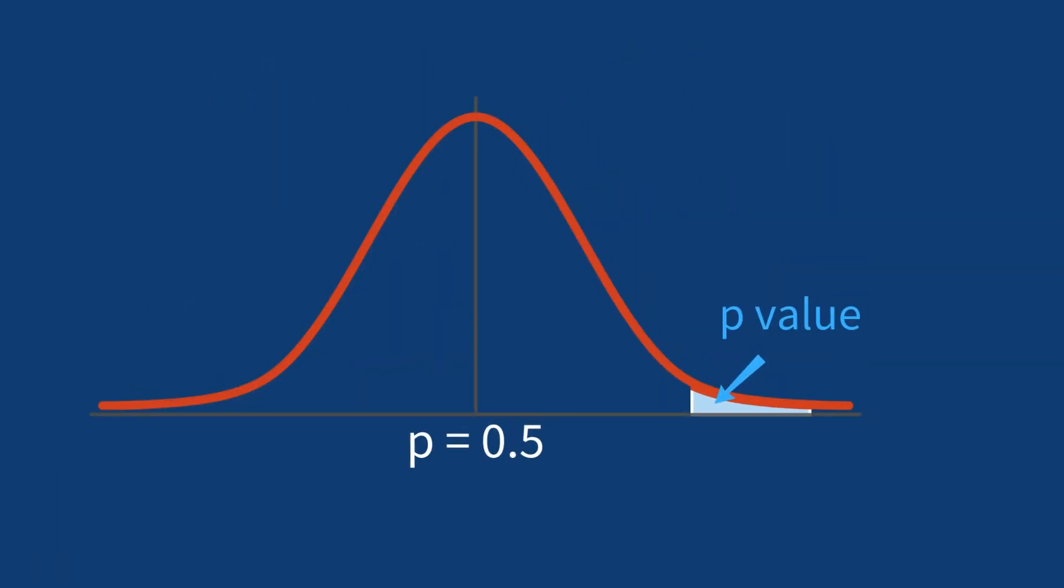To address this, you set a significance level, often denoted as alpha, before starting your experiment. This acts as a cut-off point for determining statistical significance.